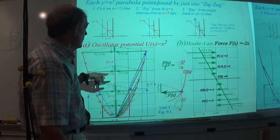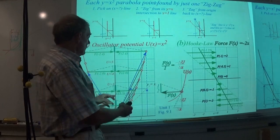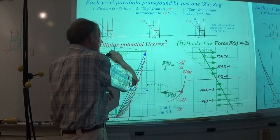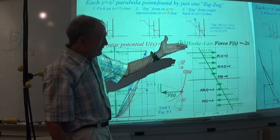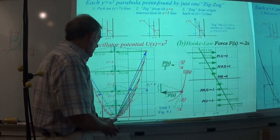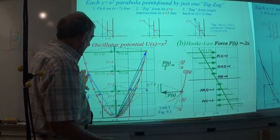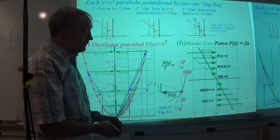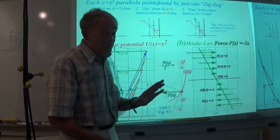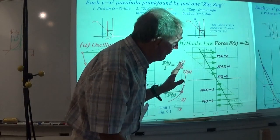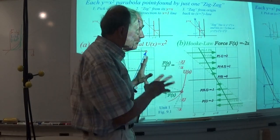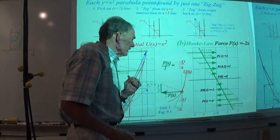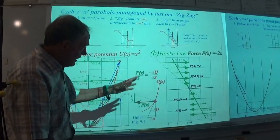This one is just showing that the force vector for a parabola, if you scale it right, is just the abscissa scaled by minus 2. On either side here is the picture. That's the end for now of the zigzag approach to this particular thing of force versus potential and the graphing of it.